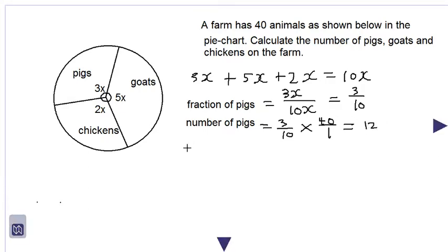Let us look at the fraction of goats. So we have 5x over the total of 10x. When we cancel the x's in the numerator and denominator, we have 5 over 10. We can also reduce this fraction to its lowest terms, 5 into 5 is 1, 5 into 10 is 2. So half of the animals are goats.